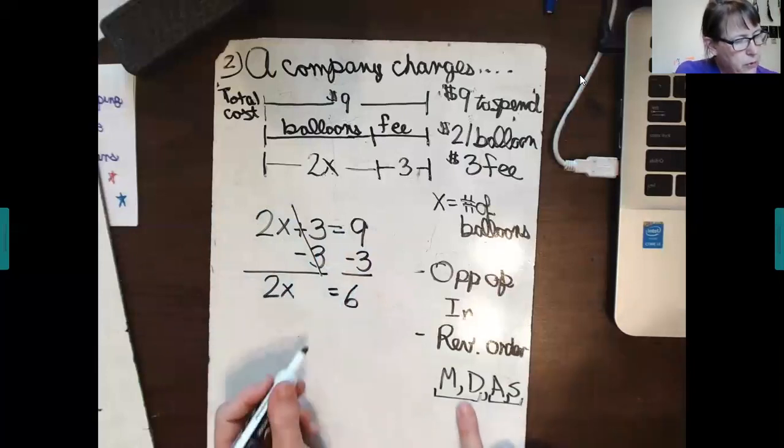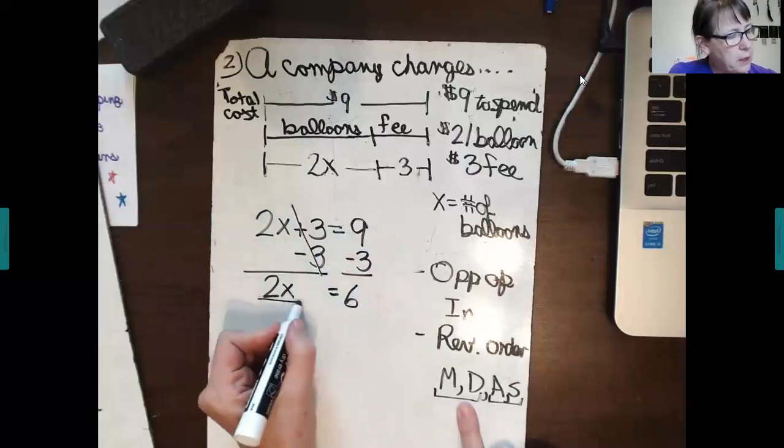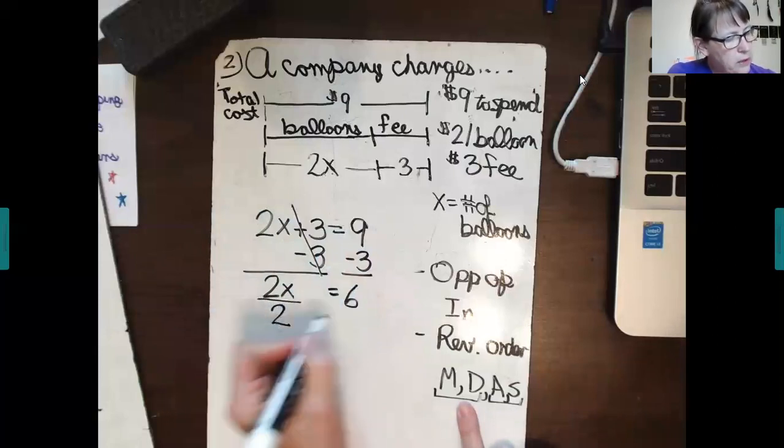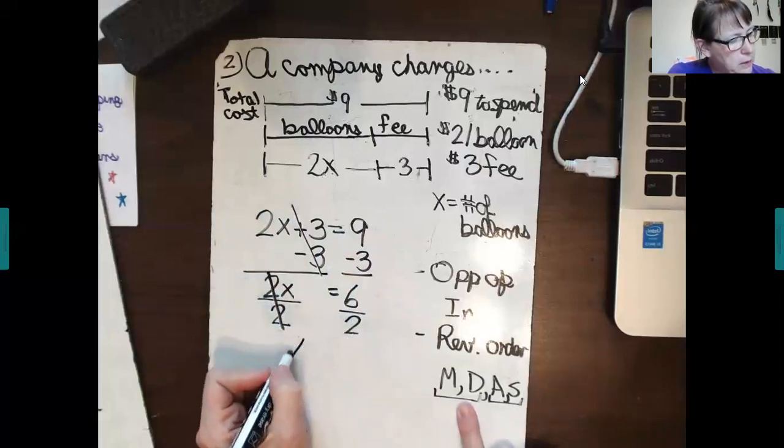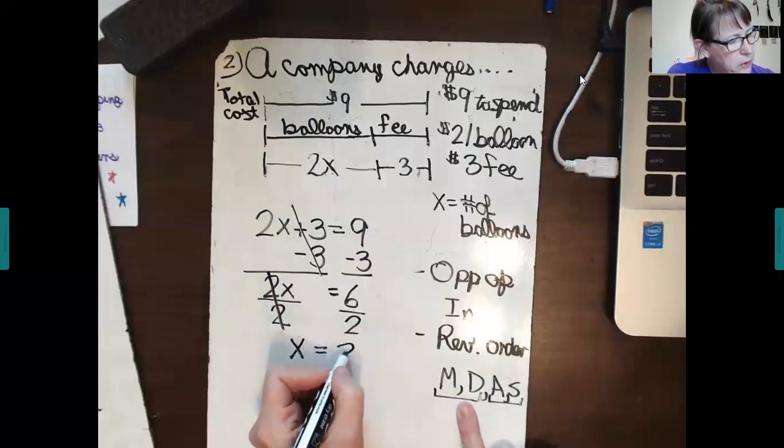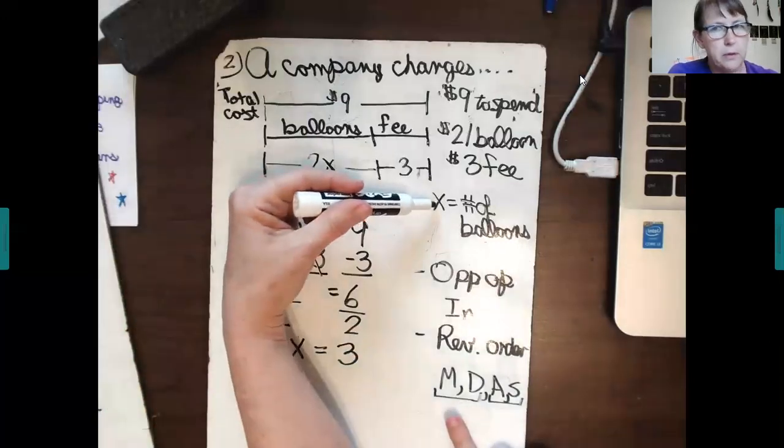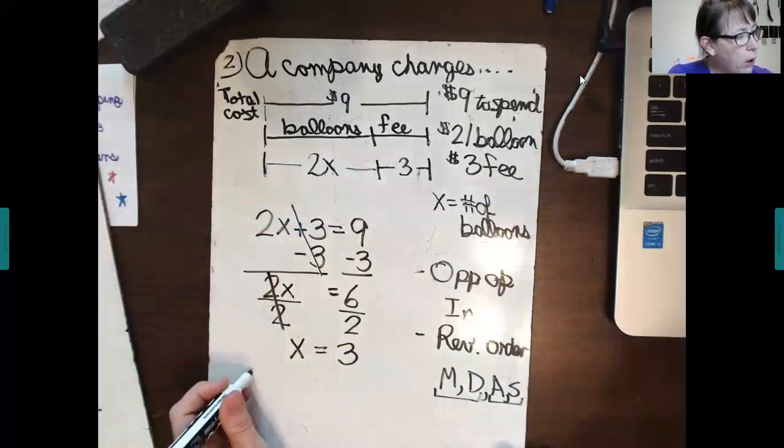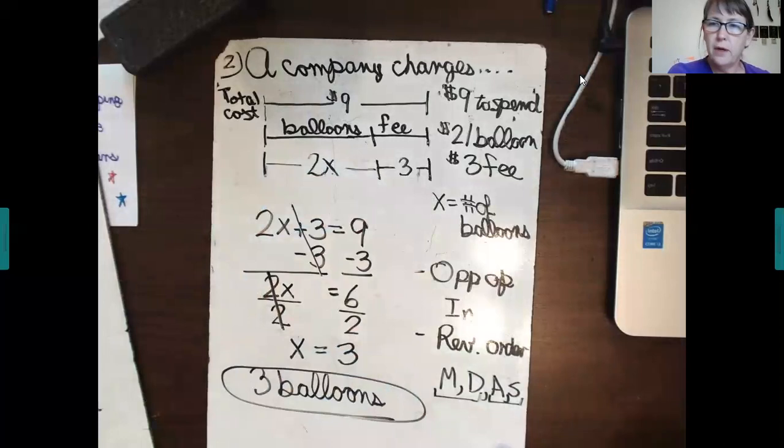Now, in reverse order, we're almost done. It's saying 2 times X. So, the opposite of multiplication is divide each side by 2. 2 over 2 is 1. 1 times x is x. 6 divided by 2 is 3. Now, we go back up to our information here. We're saying, oh, x is the number of balloons that we can buy. Oh, we can buy 3 balloons.